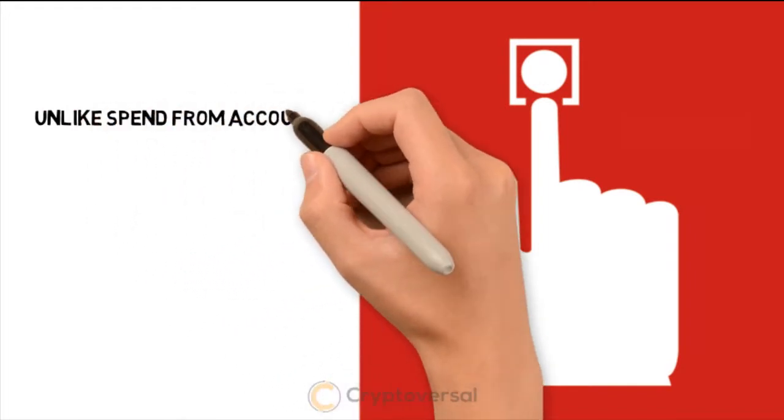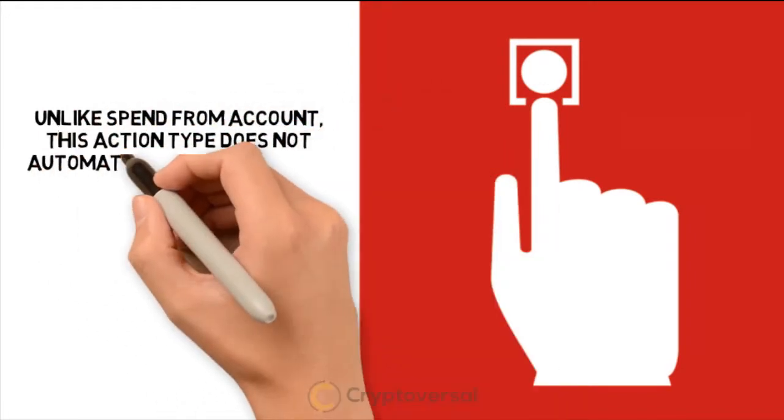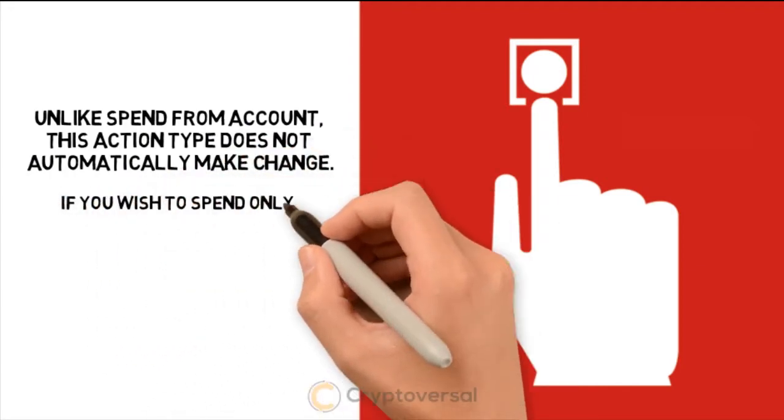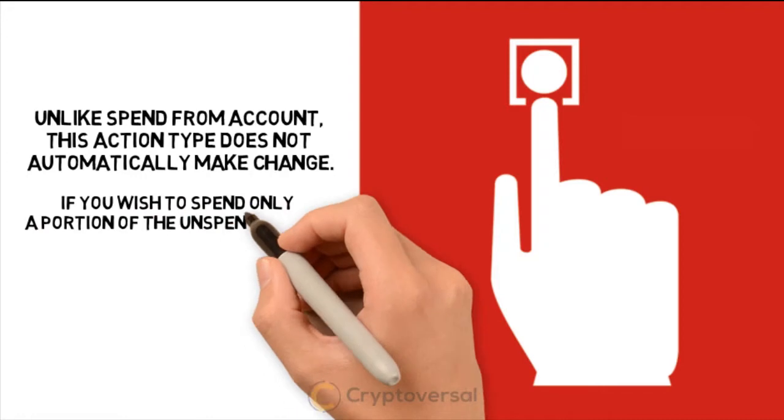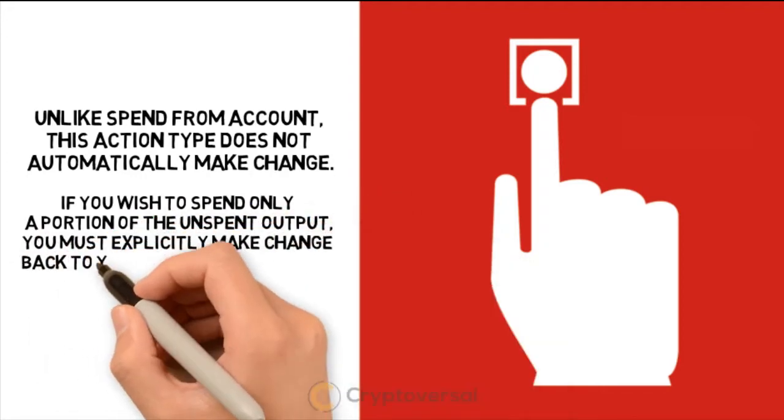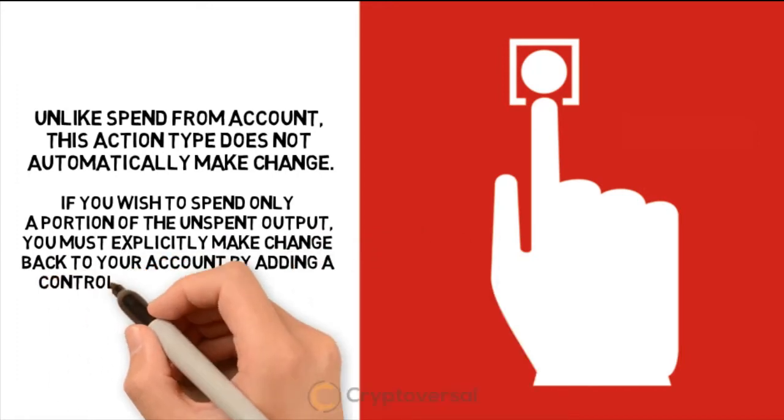Unlike Spend from Account, this action type does not automatically make change. If you wish to spend only a portion of the unspent output, you must explicitly make change back to your account by adding a Control with Account action.